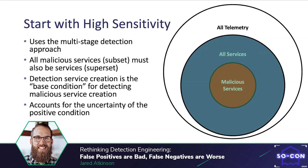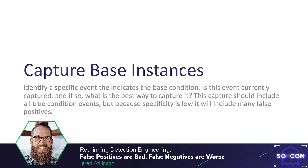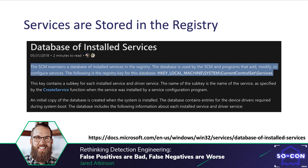Once we have successfully identified the base condition, we can focus on identifying an event which represents its occurrence. It's great that conceptually for every malicious service there must be a service creation event, but we need to convert this theory into practice by leveraging our telemetry. Capturing these instances should provide a high level of sensitivity and reduce false negatives, but will likely be low in specificity — meaning increased false positives. When considering how to identify service creation, it is important to think about how services are represented on the system and where our monitoring opportunities are.